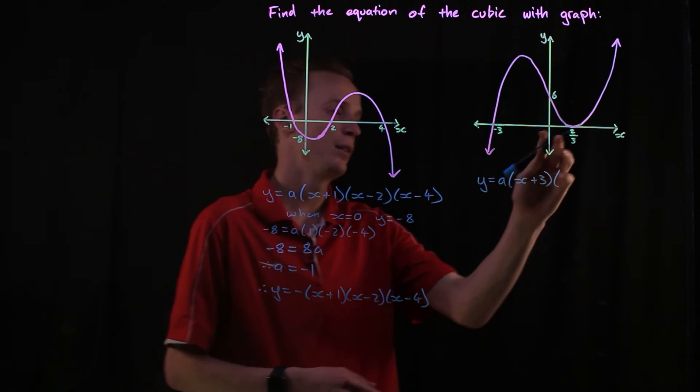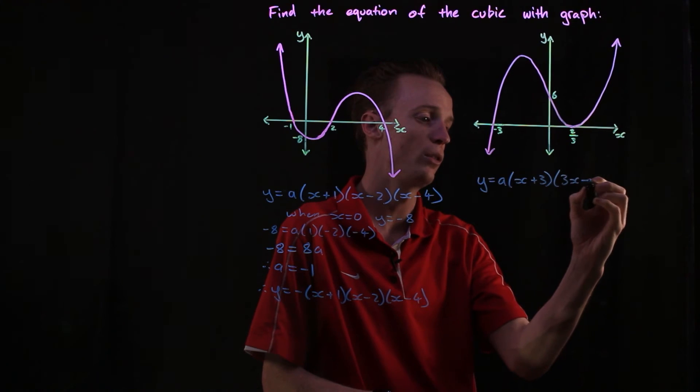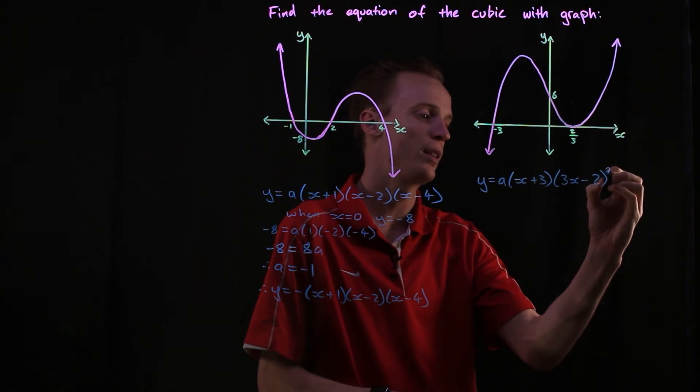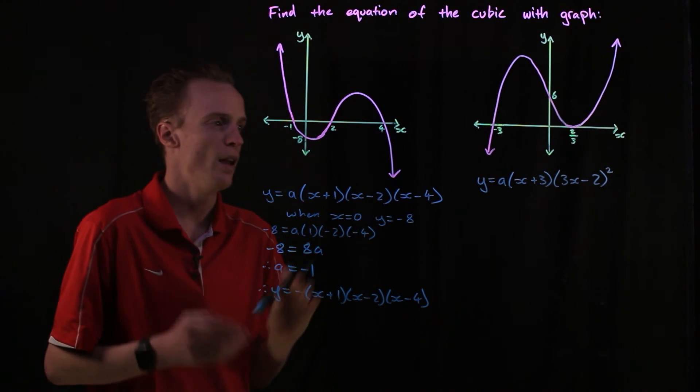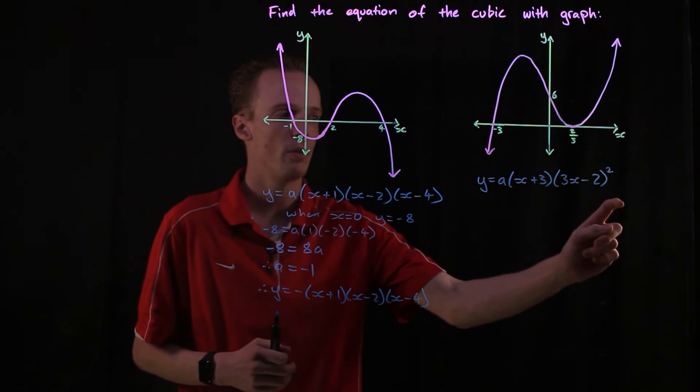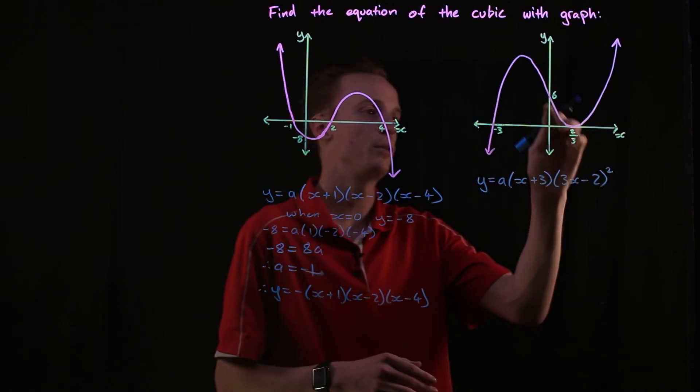But this one here, if I just represent the linear root, that'll be three x take two. But because it's only touching here we need to square this factor here. And from here we follow the same sort of steps. We've got the general graph for our cubic but we've got to find the value of a, so we've got to substitute another point.